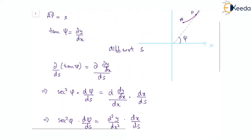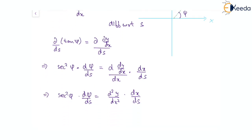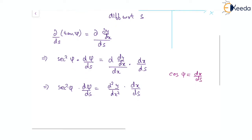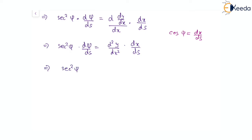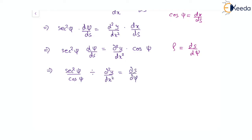This differentiation of dy/dx with respect to x is actually going to be the second derivative, that is d²y/dx², times dx/ds. Now, as we are in the Cartesian coordinate, with P having the coordinate of x and y, this dx/ds will be nothing but cos ψ. So we will use cos ψ as dx/ds. We will get sec² ψ · dψ/ds equal to d²y/dx² times cos ψ. The radius of curvature is given by ρ = ds/dψ. Using this, sec² ψ / cos ψ divided by d²y/dx² will be ds/dψ, which means this is ρ.